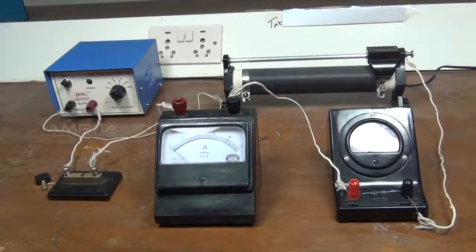Here we are converting the given galvanometer of known resistance or figure of merit into an ammeter of desired range.